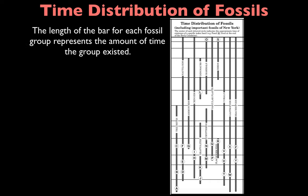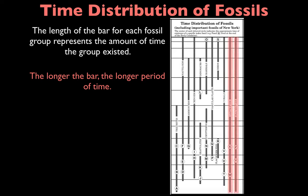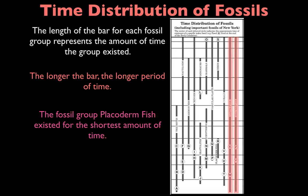The length of the bar for each fossil group represents the amount of time that specific group existed on Earth. Simply put, the longer the bar, the longer the period of time. Gastropods and brachiopods existed far into Earth's past and still exist today — they have the longest bar. On the other hand, Placoderm fish has been around for the shortest amount of time, which we can determine because the length of its bar is really short.